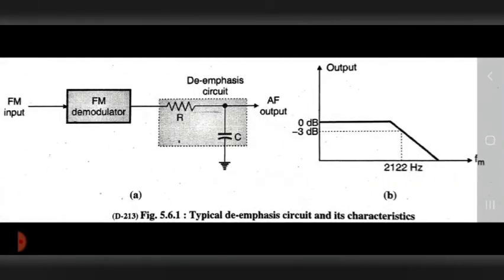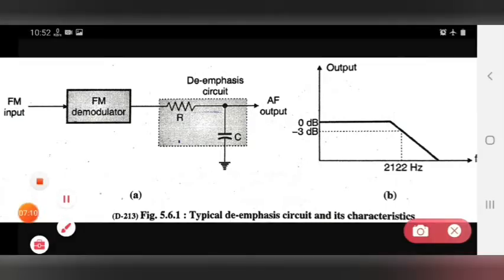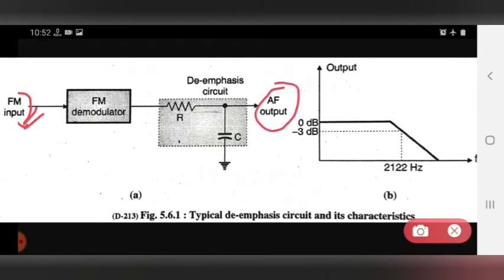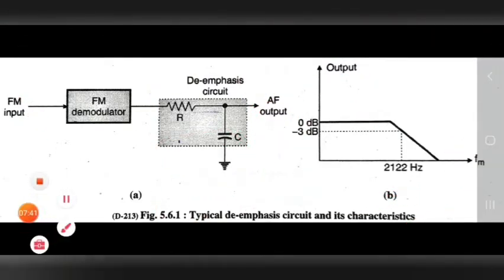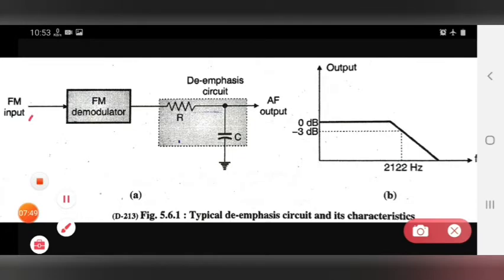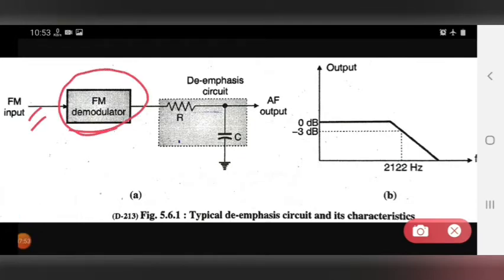Next, we look at de-emphasis. This is the diagram and characteristics for de-emphasis. The input for de-emphasis is FM input and the output is the AF output, using the de-emphasis circuit. On the characteristics graph, the y-axis shows output and the x-axis shows FM frequency. In the block diagram, the input is FM, first the FM demodulator is used, and after that the de-emphasis circuit is used.